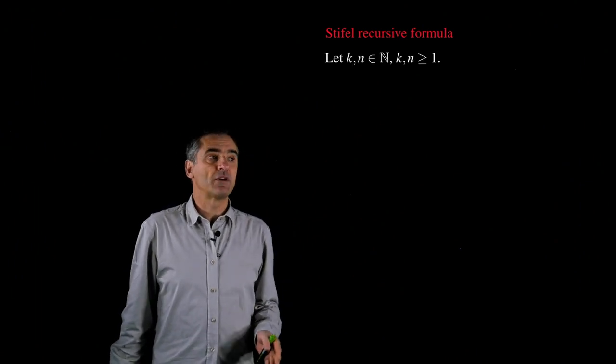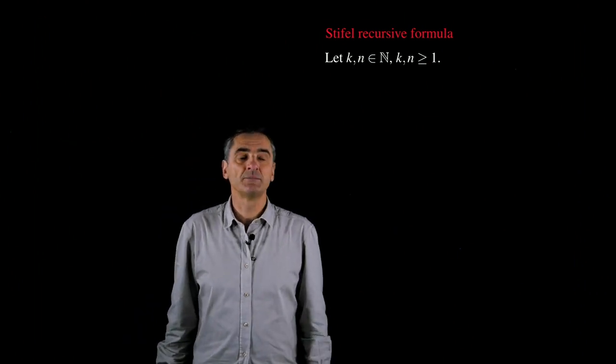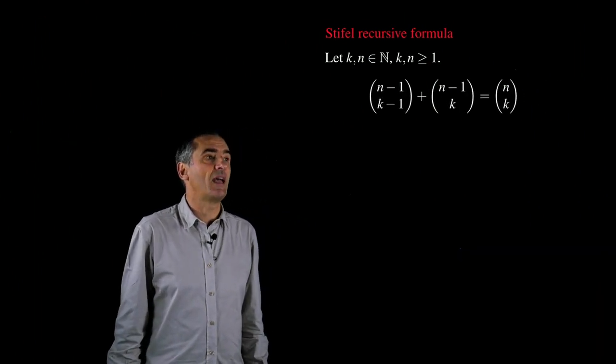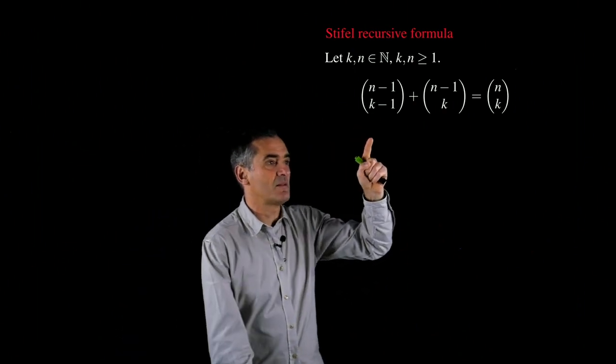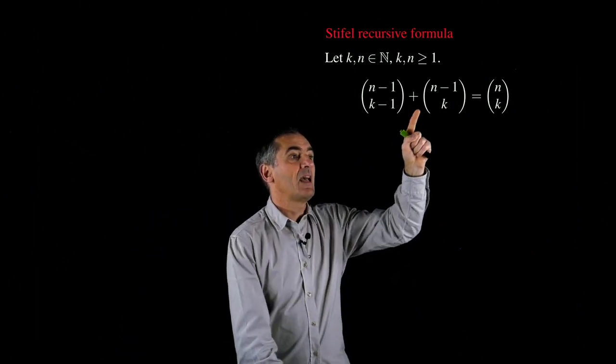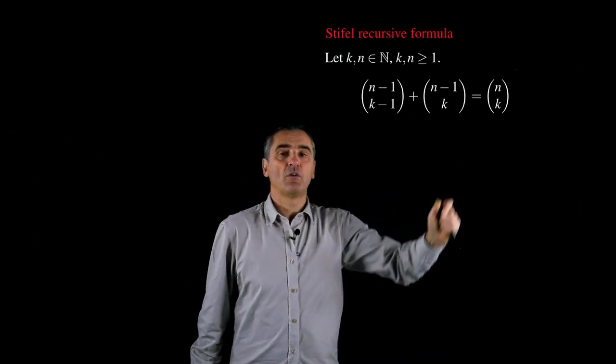Given two natural numbers k and n, both greater or equal than 1, then you have that the sum of n minus 1 over k minus 1 plus n minus 1 over k is equal to n over k.